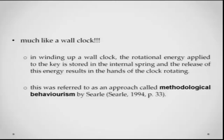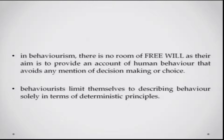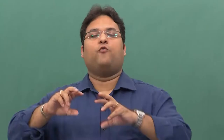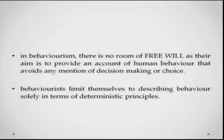In behaviorism, if you have noticed, there is no room for free will — their aim is to provide an account of human behavior that avoids any mention of decision making or choice. You cannot want to do something or have a desire to do something unless the physical antecedents permit you. The physical antecedents will completely determine how your behavior will be in a particular situation. Behaviorists also limit themselves to describing behavior solely in terms of these deterministic principles — law of effect, learning, reinforcement, punishment. To sum up: the theory of behavior is defined with respect to a set of laws of behavior, and the aim of behaviorism is to uncover these laws in order to predict and control behavior. Any theory that attempts to explain human behavior should only contain statements about observable objects and events.